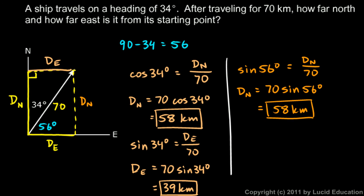And then over here, I can also say, look at this angle and think about the cosine. I can say the cosine of the 56 degree angle. Cosine is what over what? Cosine is adjacent over hypotenuse. So in this case, that's DE over 70. So DE is equal to 70 times the cosine of 56 degrees. And if you work that out on the calculator, you get, of course, 39 kilometers. So same as before.